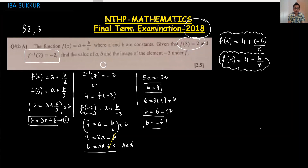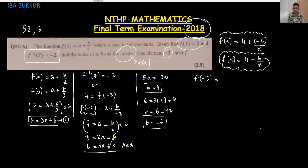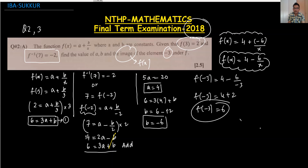Next, find the image of the element -3 under f. Remember, image means f(-3). Substituting: f(-3) = 4 - 6/(-3) = 4 + 2 = 6. So f(-3) = 6. This was straightforward — no need to use the inverse function.